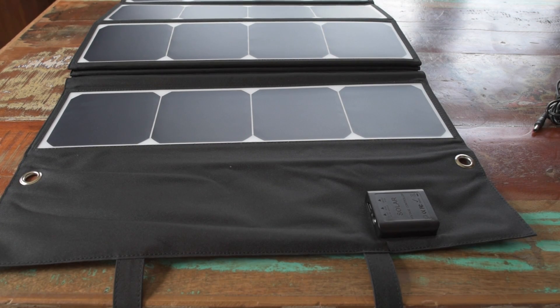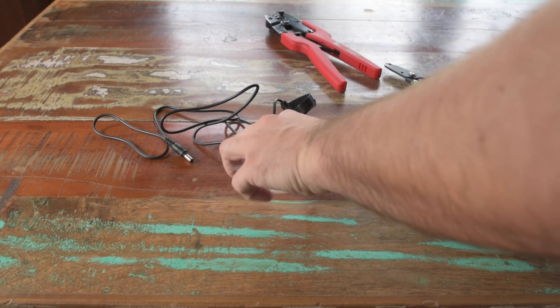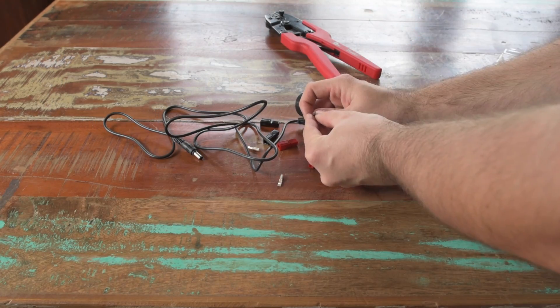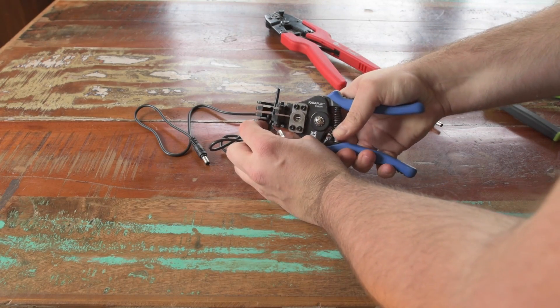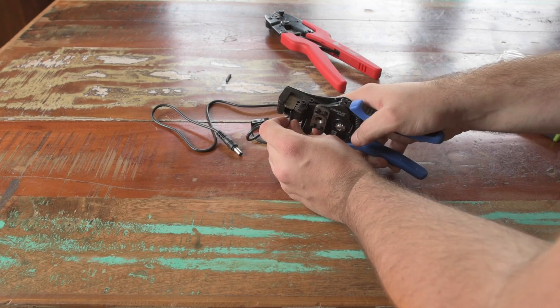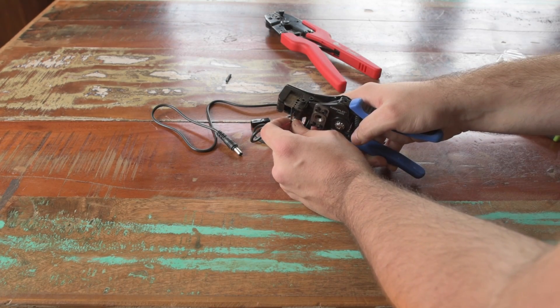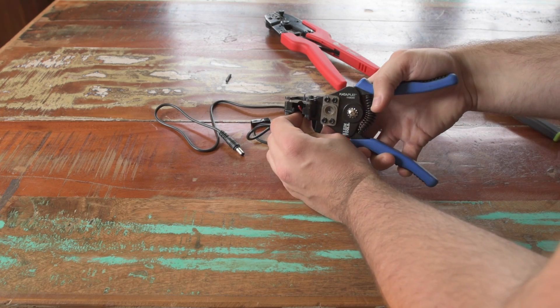All right, let's get started. Two conductors. That's good. These are very small wires. Look like they're 20 or 18 gauge. Very, very small.